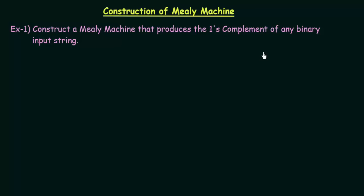Suppose you have a number like 1, 0, 1, 0, 0. What would be the one's complement of that? Just change the 1s to 0s and 0s to 1s. So here this will be 0, 1, 0, 1, 1. So this is the one's complement. We need to design a Mealy machine that can perform this kind of task.